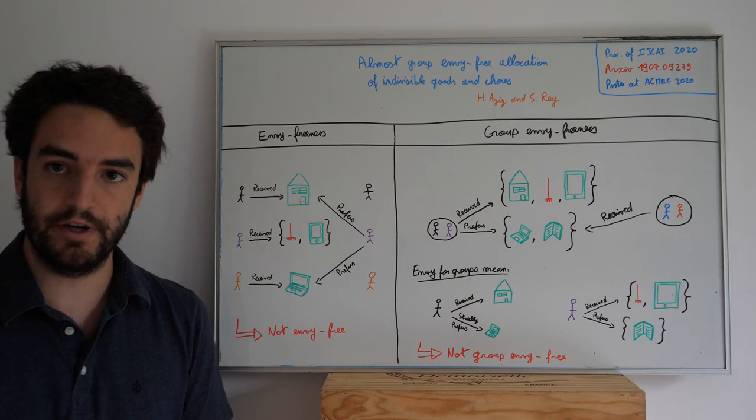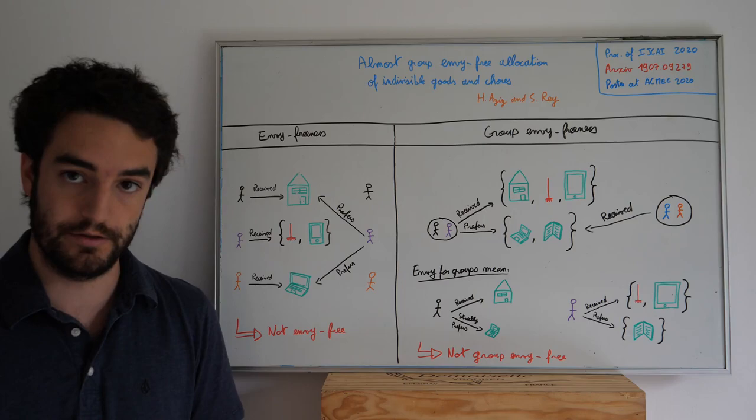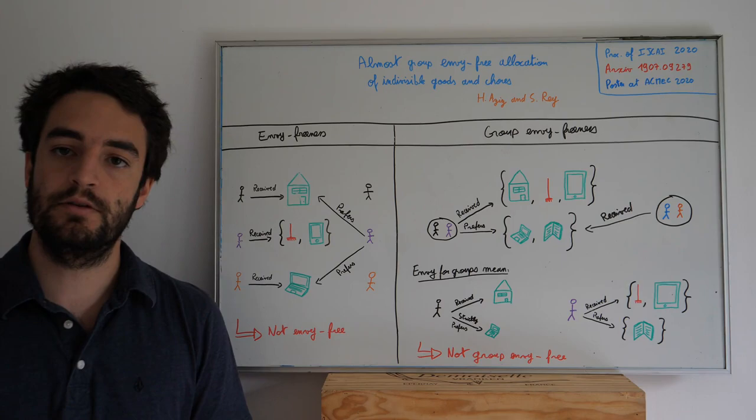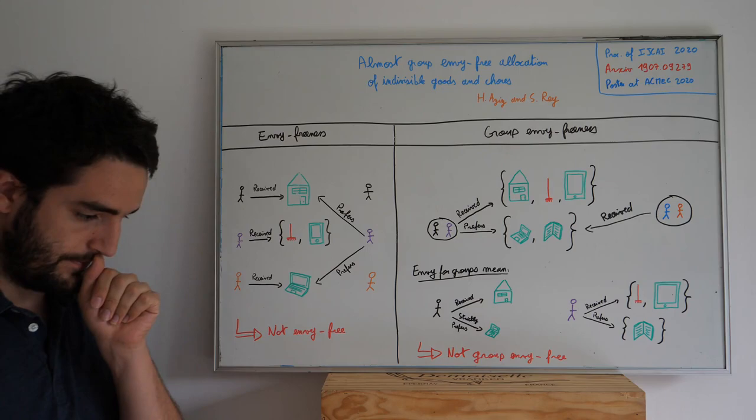Our goal here is to define fairness criteria that apply to groups of agents when there are items that yield either positive or negative utilities to the agents. Our starting point is envy-freeness, which states that in an allocation there are no two agents such that one envies the other, which is clearly not the case here, for instance.